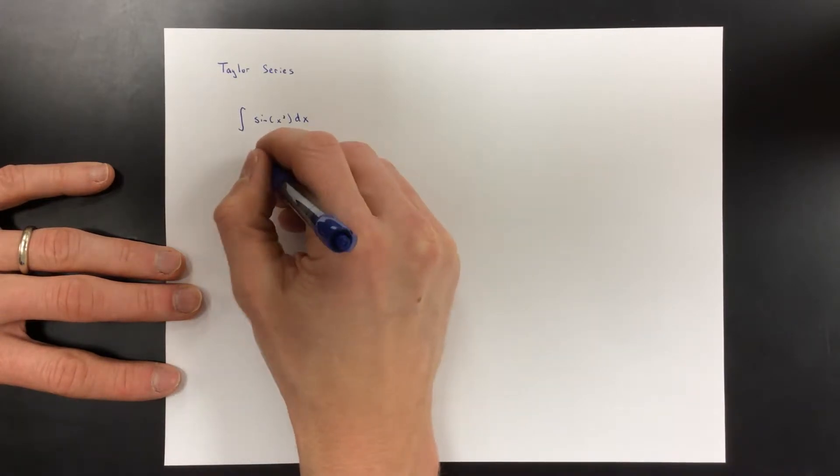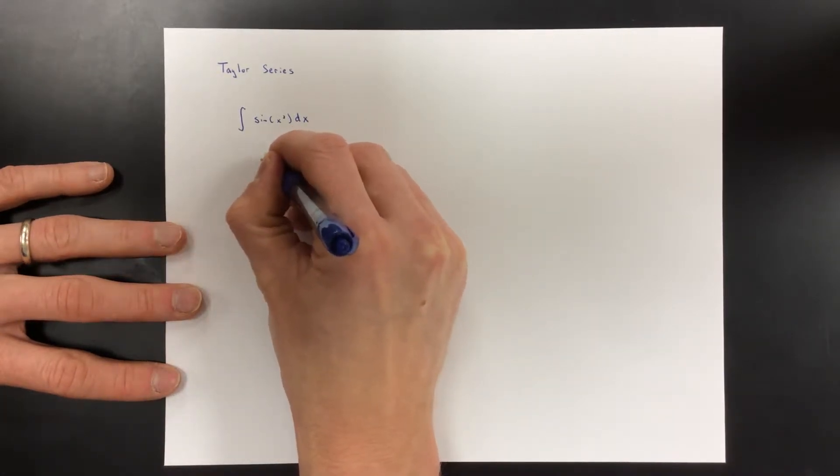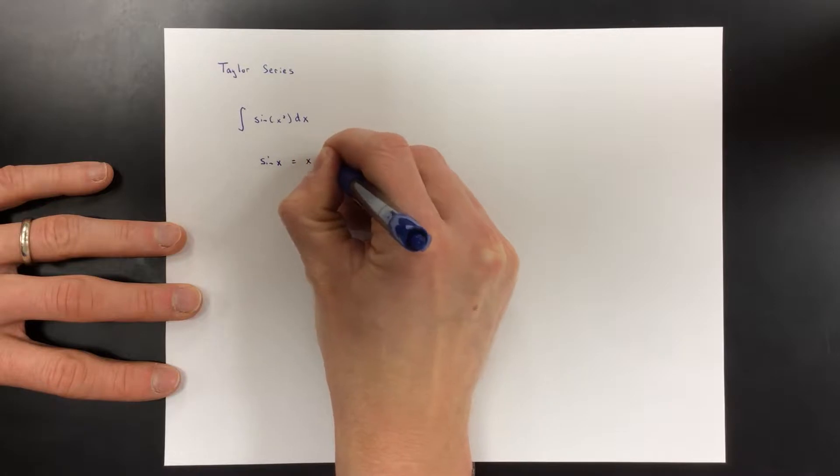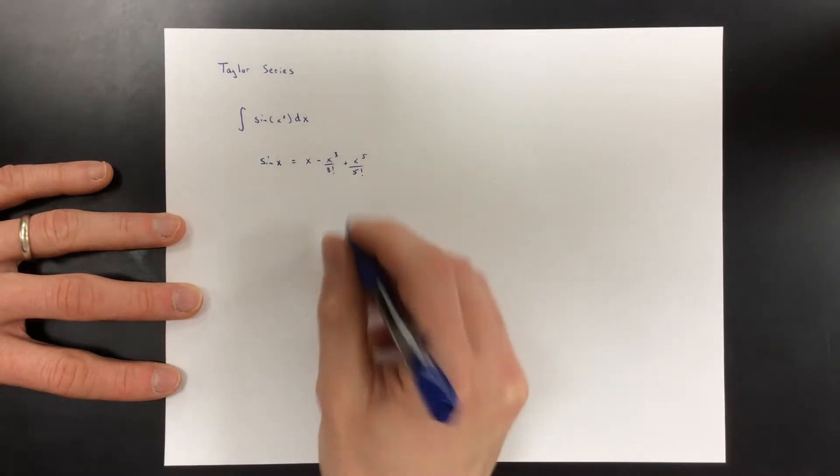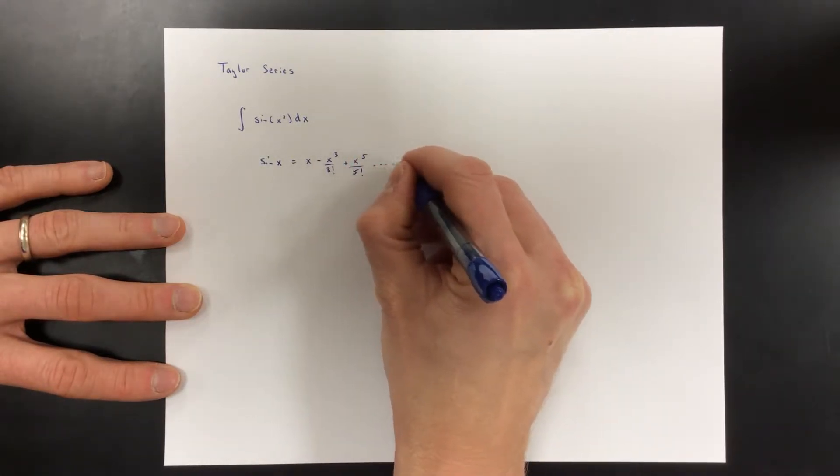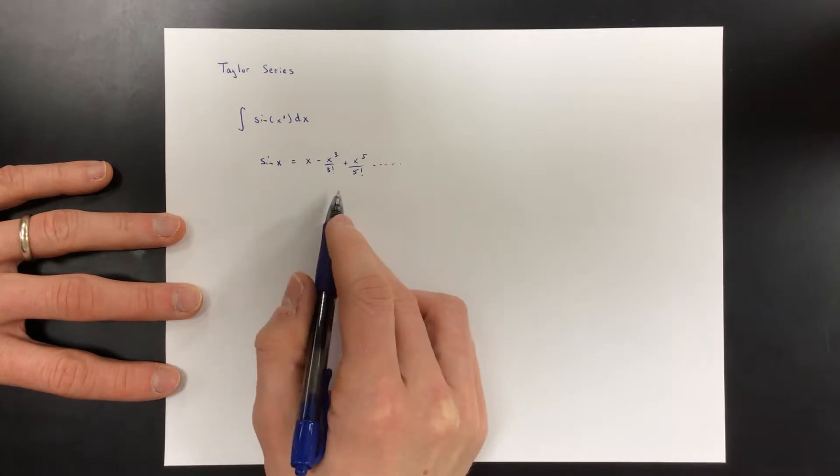So what do we do? Well we use the Taylor series. If we think about it, we know sine x is x minus x cubed over 3 factorial plus x to the fifth over 5 factorial. We can stop there, we know it goes on forever but let's just use the first three terms.